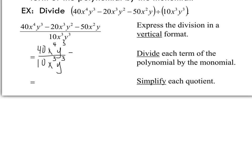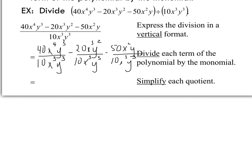So you're going to have 40x⁴y³ divided by 10x³y³, then minus 20x³y² divided by 10x³y³, and then the same thing for the third term. Whatever we do to one, we have to do to all. Does everybody see why we're dividing all three of them?